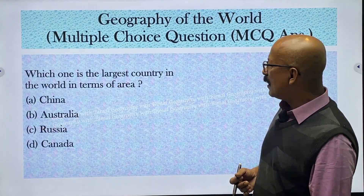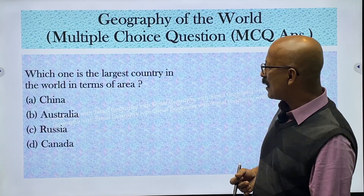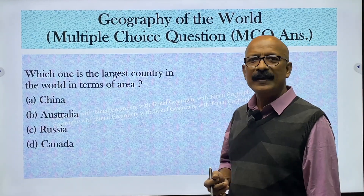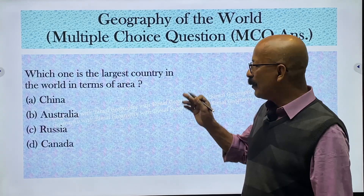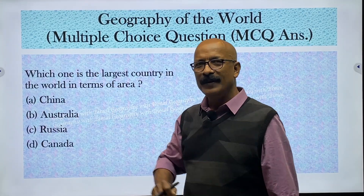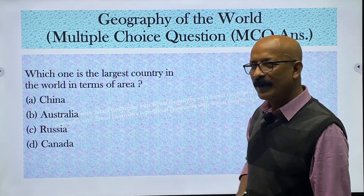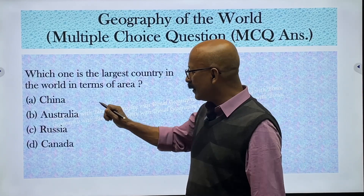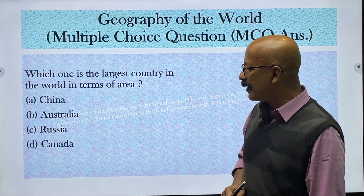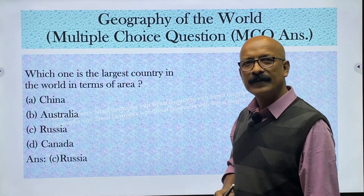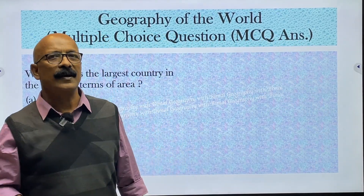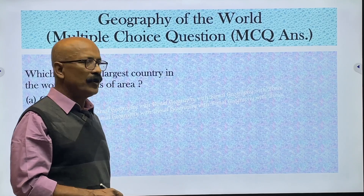Which is the largest country in the world in terms of area? Options are China, Australia, Russia, and Canada. China is number one in terms of population. But in terms of geographical area, the correct answer is Russia — Russia is the largest country geographically.